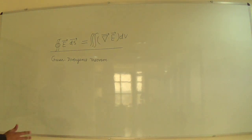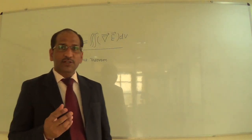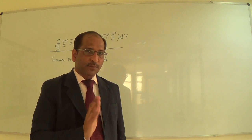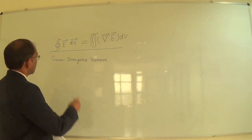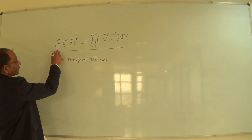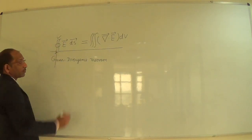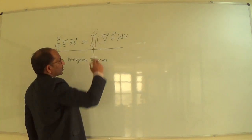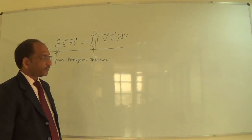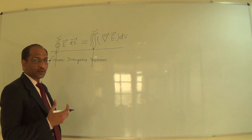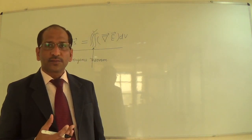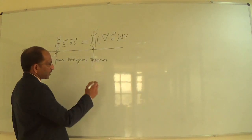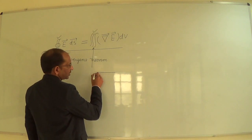In this mathematical equation, the left-hand side contains the closed surface integral, and the right-hand side contains the volume integral. Now I want to clarify what is meant by a closed surface versus an open surface. A surface is closed — suppose you consider a box.